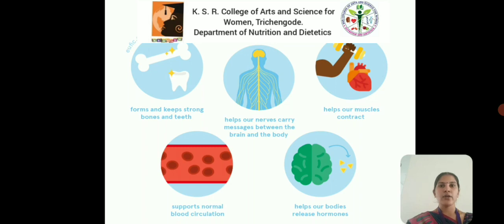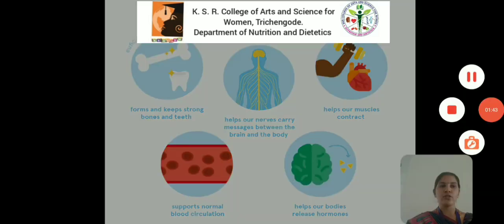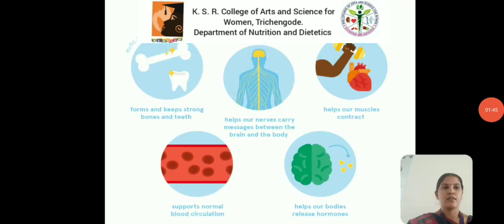There are also important non-collagen proteins within the skeleton. Calcium helps our nerves to carry the messages between the brain and the body, and helps our muscles to contract. It supports normal blood circulation and helps our bodies to release the hormone calcitonin. Calcium acts as a cofactor and regulator of biochemical reactions like blood clotting and contraction of muscles.